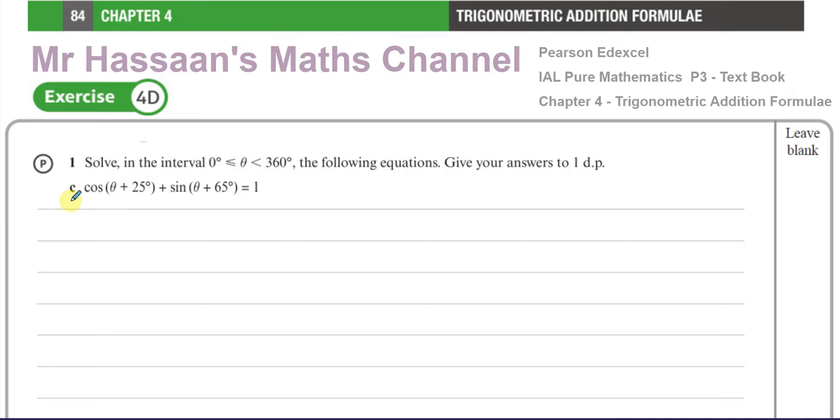We'll start by using our expansions for the addition formulae. We have two of them: cos(a ± b). You end up with cos(a) times cos(b). If it's plus there'll be a minus, then sin(a) times sin(b). This is in the formula book. If there's a minus, there's a minus between them.